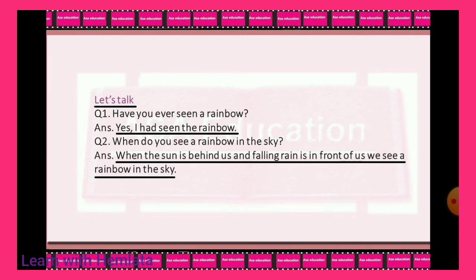Let's talk. Question one: Have you ever seen a rainbow? Yes, I had seen the rainbow in the rainy season, because mostly we can see the rainbow in the rainy season. Question two: When do you see a rainbow in the sky? When the sun is behind us and falling rain is in front of us, we see a rainbow in the sky.